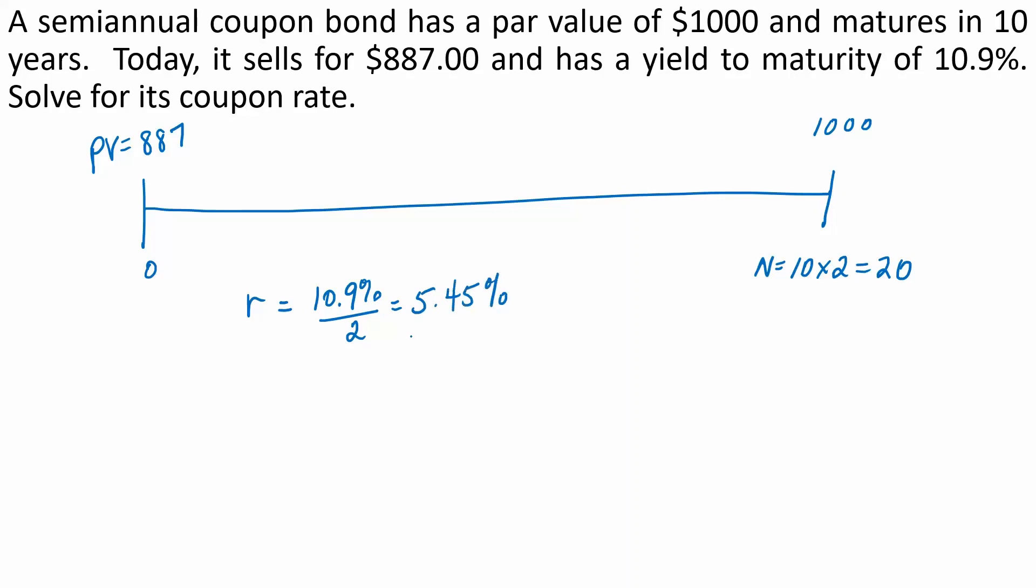The question is, what is the coupon rate? To solve this problem, we have to find out what aspect of the bond is missing, and that is the coupon payment, which I'll label as PMT. If we can solve for PMT, we can then find the coupon rate.